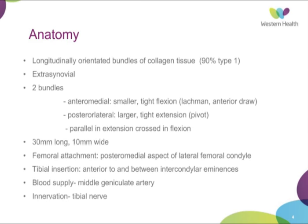Just briefly, a bit of anatomy of the knee and the ACL. The ACL is made up of collagen type 1 majority-orientated bundles. It's extra-synovial. There are two bundles to the ACL — your anterior medial, which is smaller and taut in flexion, and that's more appreciated on your Lachman's anterior drawer test. And then you've got your posterior lateral bundle, which is the more bulky segment. It's tight in extension, and this is more appreciated on the pivot test. The two bundles are parallel in extension of the knee and crossed in flexion.